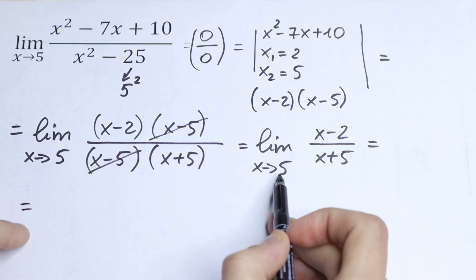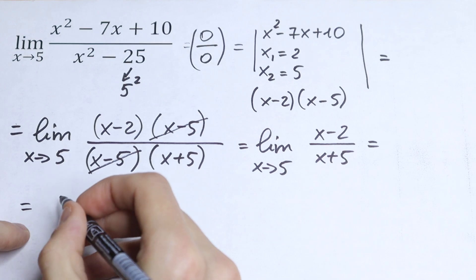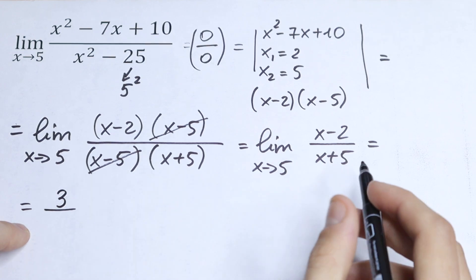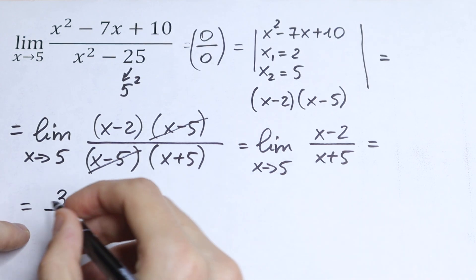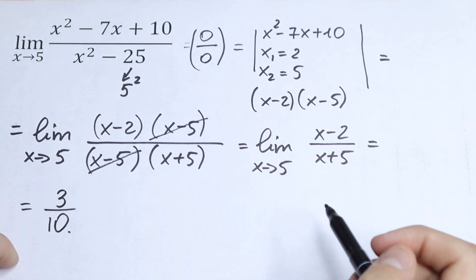Let's do direct substitution. In the numerator, 5 minus 2 equals 3. In the denominator, 5 plus 5 equals 10. So we get 3 over 10, and this is our answer.